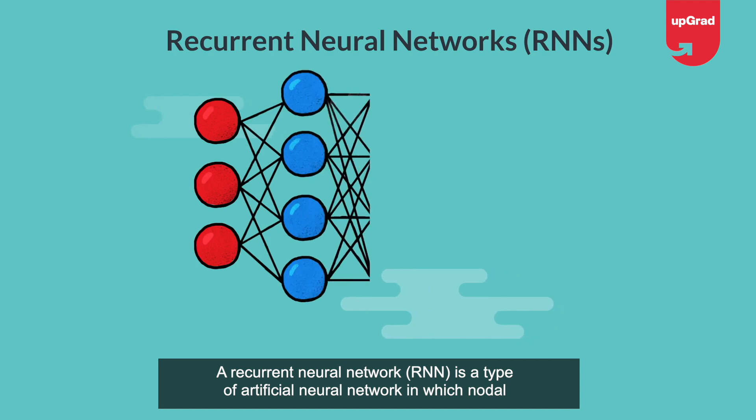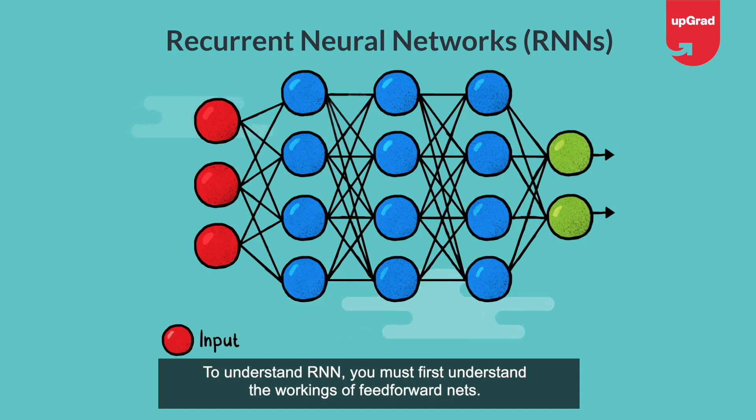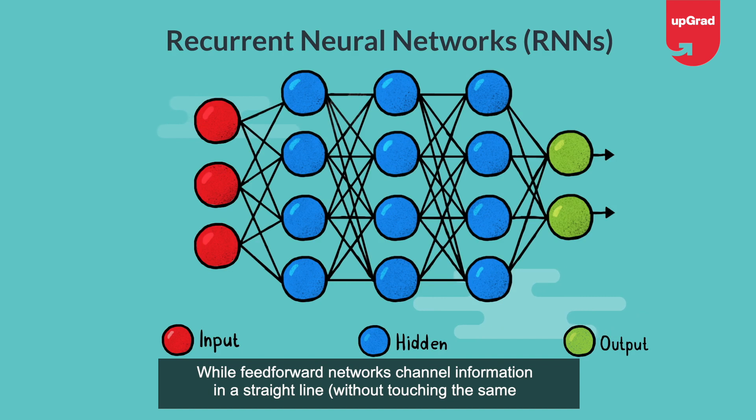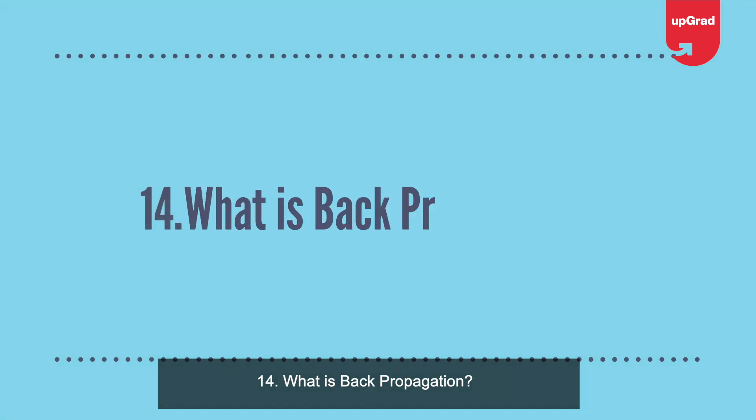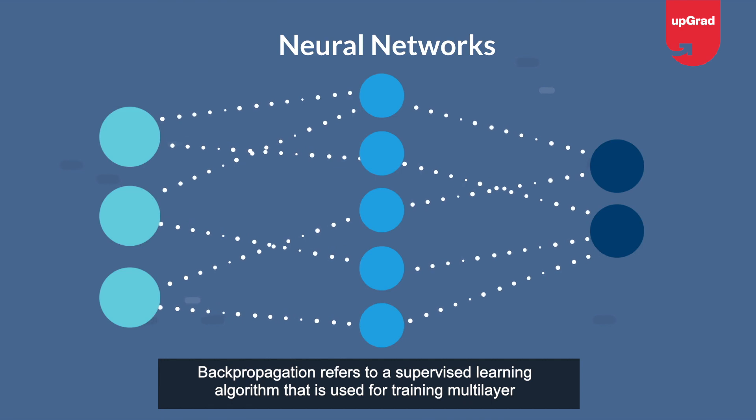Question 13: What are recurrent neural networks? A recurrent neural network (RNN) is a type of artificial neural network in which nodal connections result in a directed graph along a temporal sequence, thereby exhibiting temporal dynamic behavior. To understand RNN, you must first understand feedforward nets. While feedforward networks channel information in a straight line without touching the same node twice, recurrent neural networks cycle information through a loop-like process.